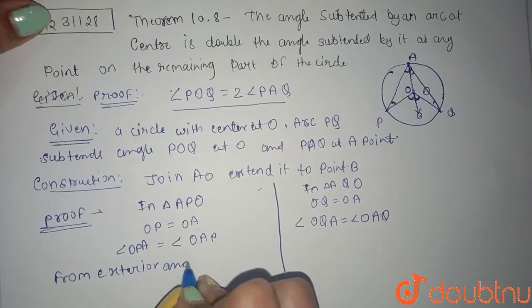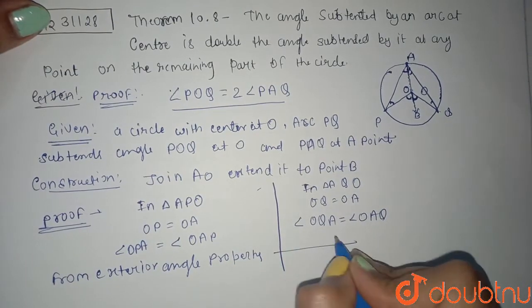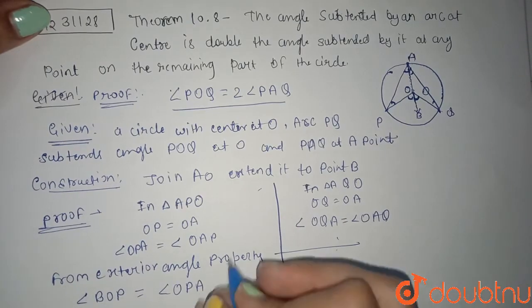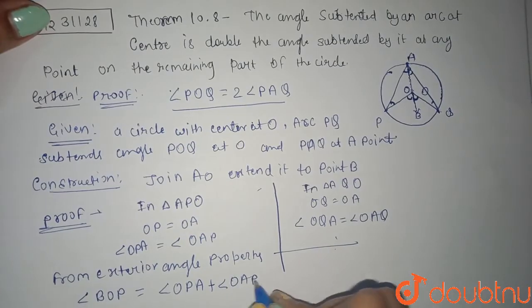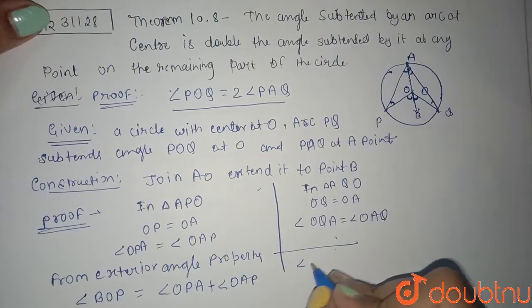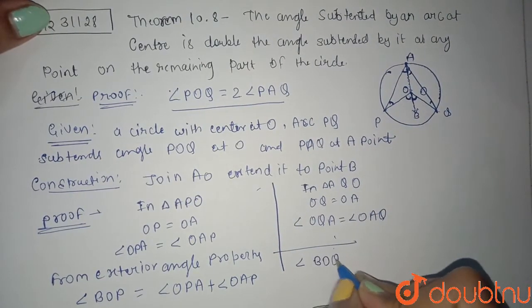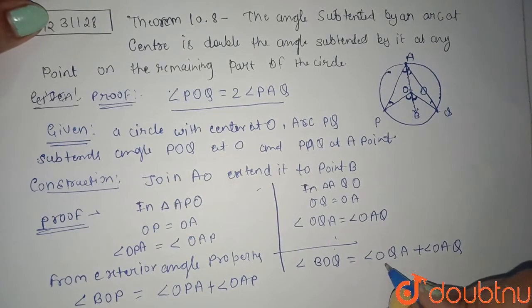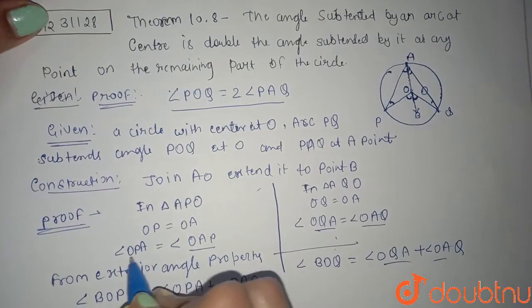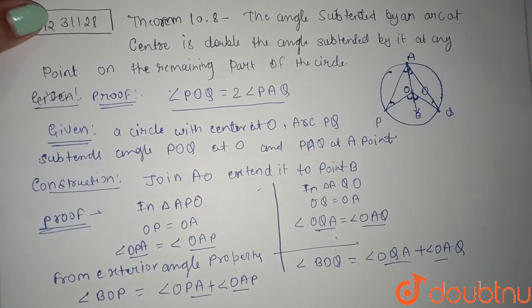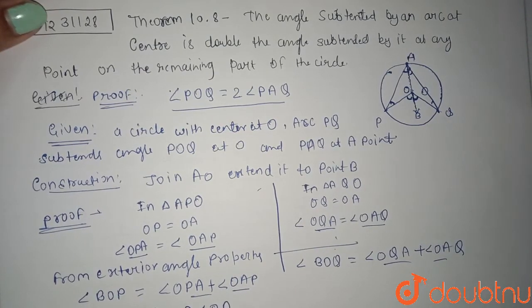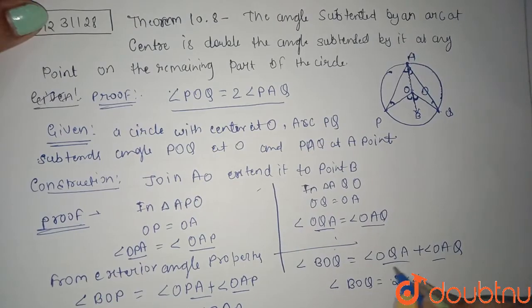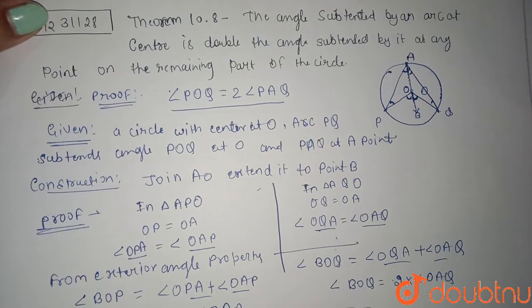From exterior angle property, I will write: angle BOP equals angle OPA plus angle OAP. And angle BOQ equals angle OQA plus angle OAQ. Since OQA and OAQ are equal, and OPA and OAP are equal, angle BOP equals 2 times angle OAP and angle BOQ equals 2 times angle OAQ. This is equation 1 and equation 2.